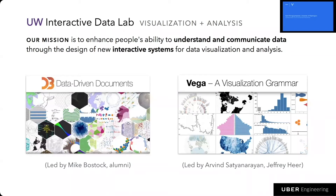For example, D3 was started as a research project at the lab by Mike Bostock, who is now an alumni of the lab. Recently we have developed Vega, which is a declarative JSON format for interactive visualization. These two are very successful for supporting custom interactive graphics both for web applications and for journalism, like you have seen in media like the New York Times.